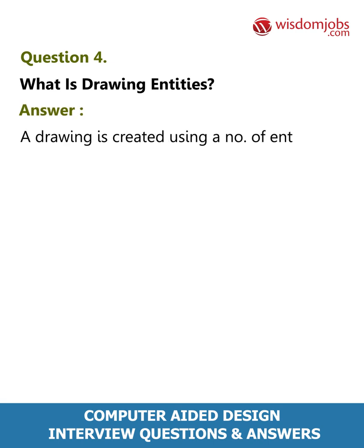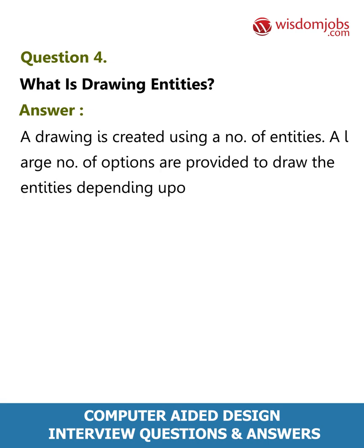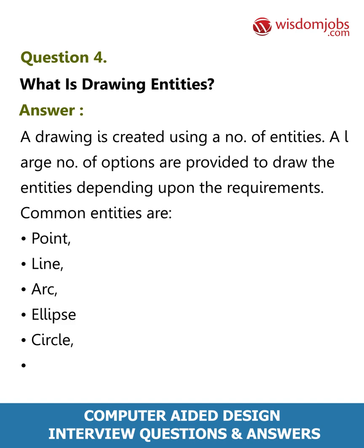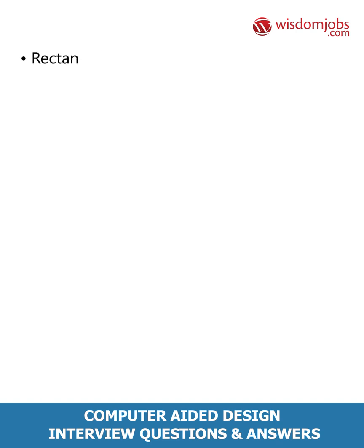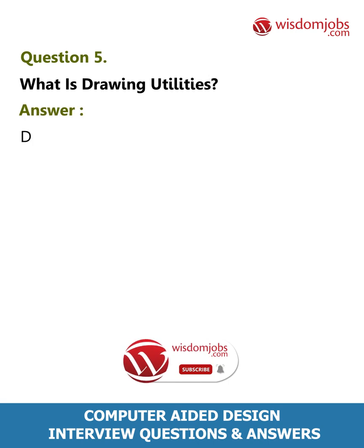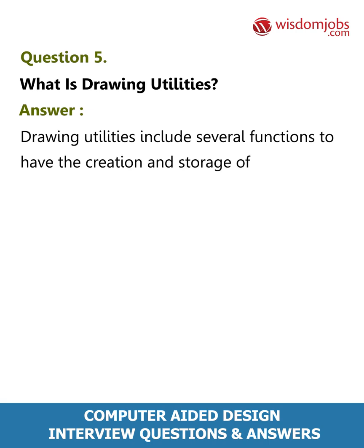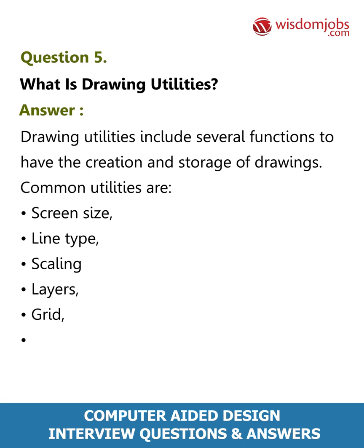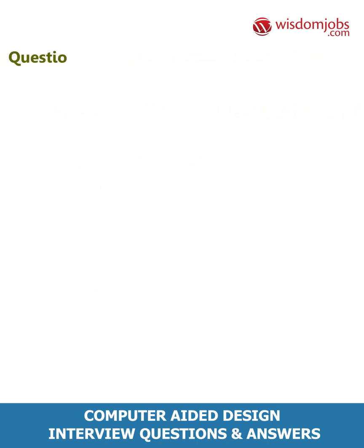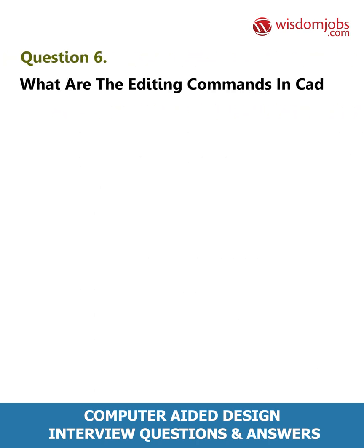Question 4: What is drawing entities? Answer: A drawing is created using a number of entities. A large number of options are provided to draw the entities depending upon the requirements. Common entities are: point, line, arc, ellipse, circle, polygon, spline, rectangle, etc. Question 5: What is drawing utilities? Answer: Drawing utilities include several functions to aid the creation and storage of drawings.